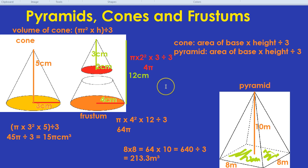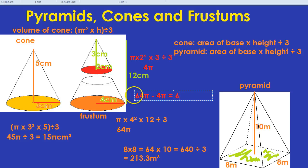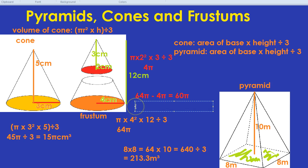Finally, to get the volume of the frustum: take the volume of the big cone, which is 64 pi, take away the volume of the small cone, which is 4 pi. 64 pi minus 4 pi equals 60 pi. So 60 pi is the volume of the frustum.